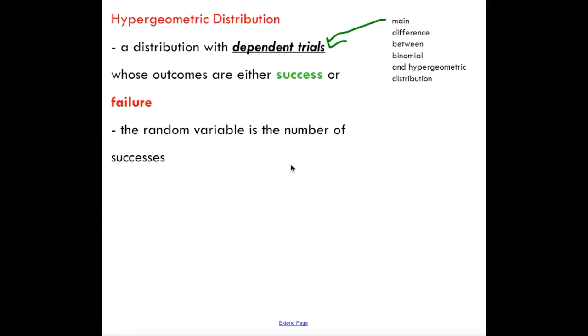The main difference between hypergeometric and binomial distribution is in binomial distribution we had independent trials. With hypergeometric distribution we have dependent trials. So we're still looking at a success or failure situation and we're still counting the number of successes. The only difference is that we're looking at dependent trials. A situation where we have independent trials that was flipping a coin, rolling a die. We're going to look at some dependent situations.